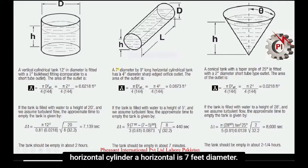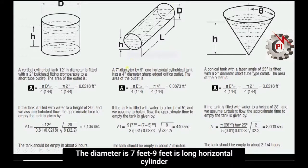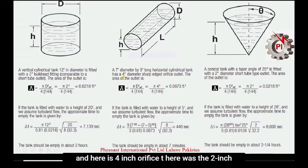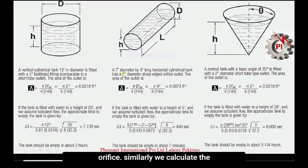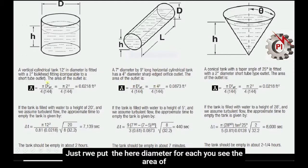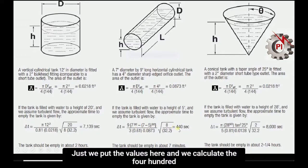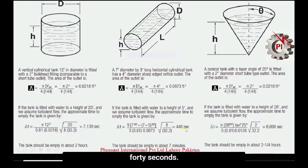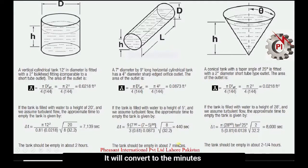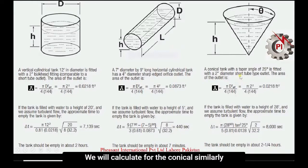After converting from seconds to hours, the tank should be empty in just over two hours. For the horizontal cylinder example, the diameter is 7 feet, the length is 9 feet, and the orifice is 4 inches. We calculate the area of the 4-inch orifice the same way and substitute into the horizontal cylinder formula, obtaining a result of 440 seconds, which we convert to minutes.